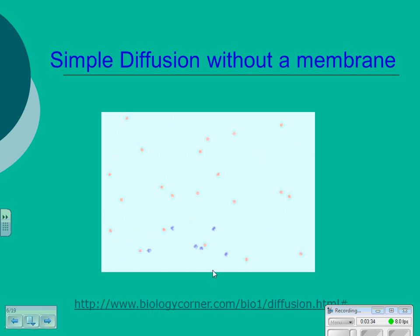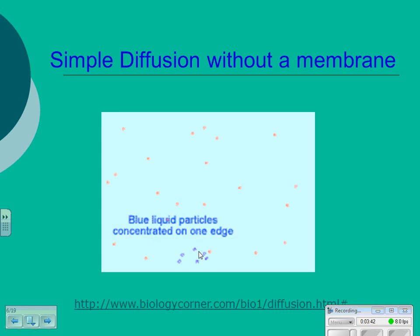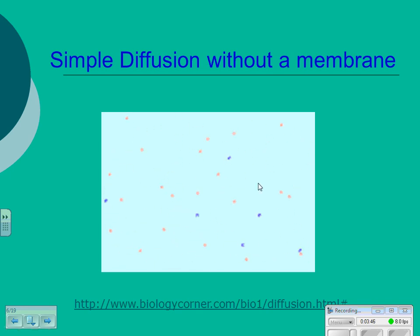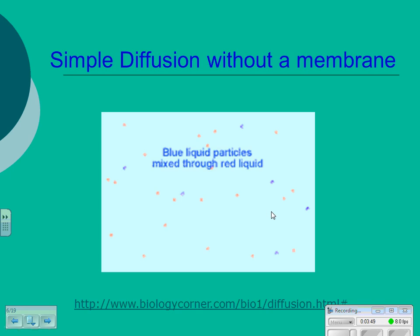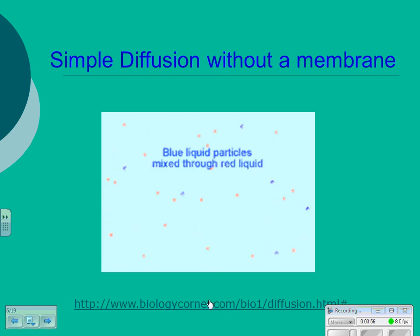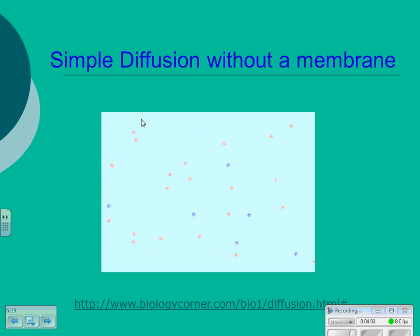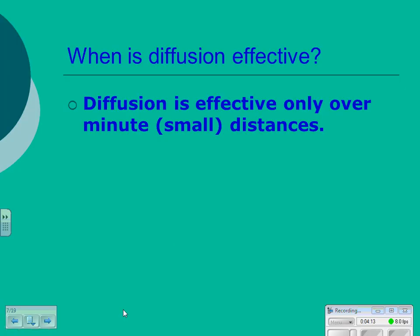In this example, blue particles are concentrated in the middle and then start to spread out and mix evenly throughout the red — high concentration moving towards lower concentrations until everything evens out. This is diffusion. So if I sprayed perfume in a tight little spot, it would be concentrated but would diffuse eventually throughout the room. Diffusion is really only effective over minute — meaning small — distances.